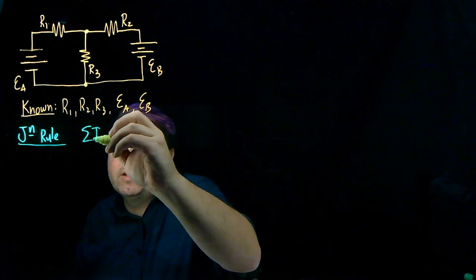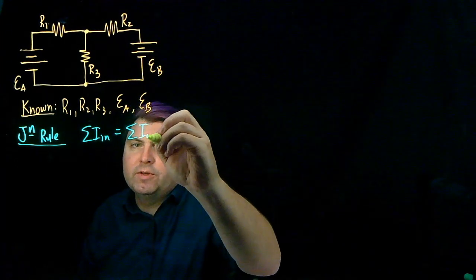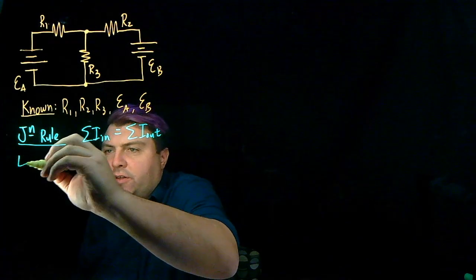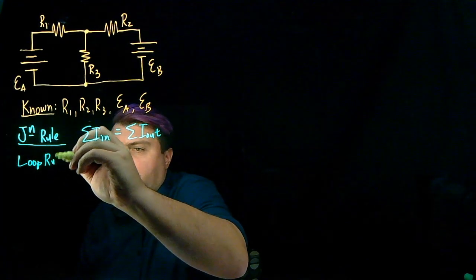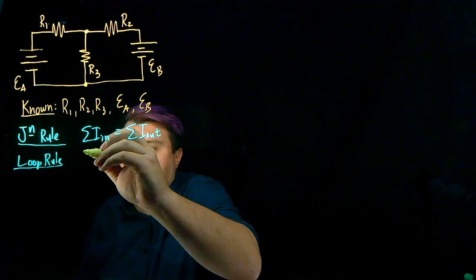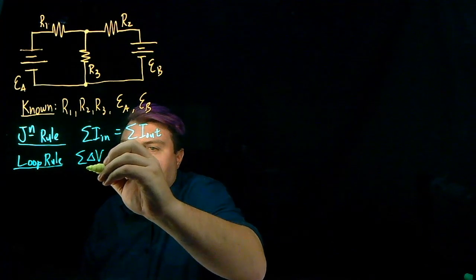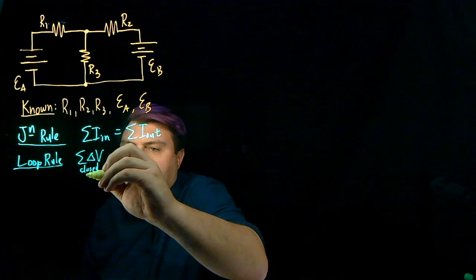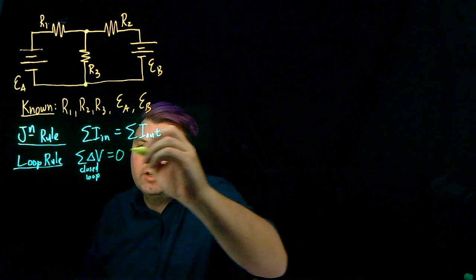Our junction rule is that the sum of the current in is equal to the sum of the current out. And our loop rule is that the sum of the delta v's over a closed loop is equal to zero.